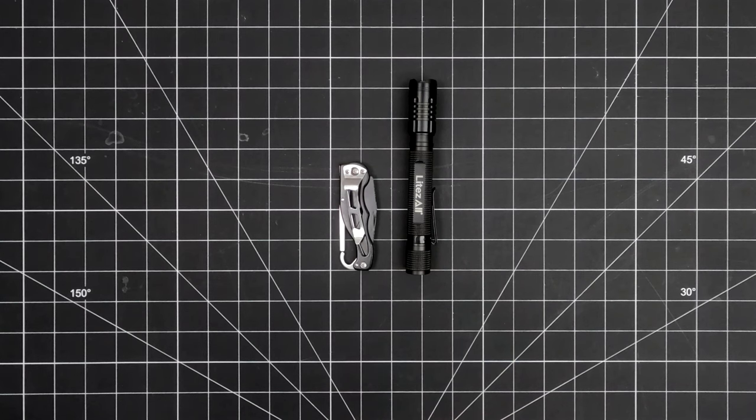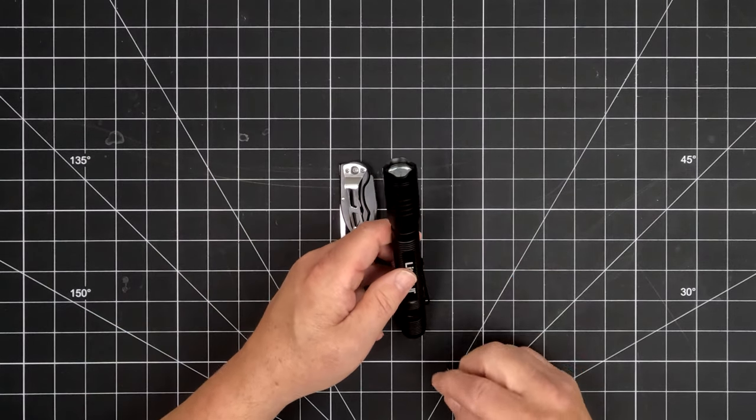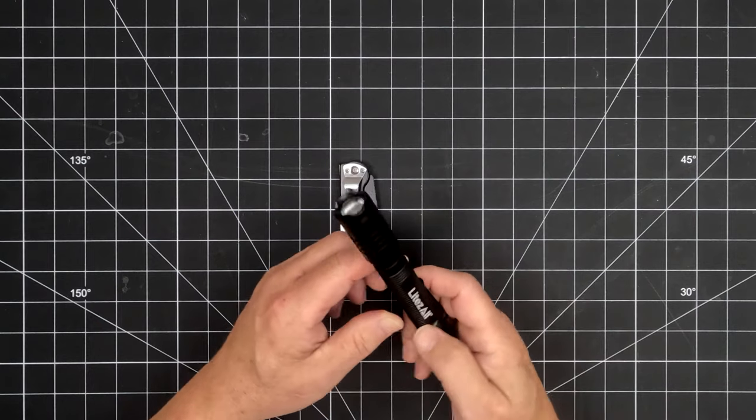The flashlight is made of aerospace-grade aluminum and measures 5.9 inches in length by 3 quarters inch in diameter, weighing in at 4 ounces.